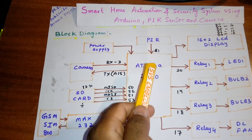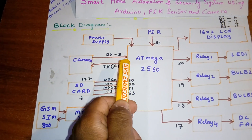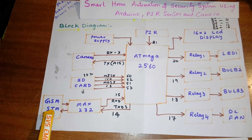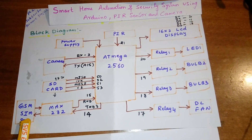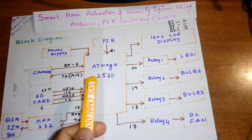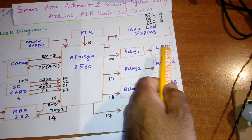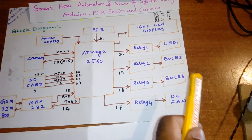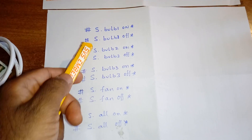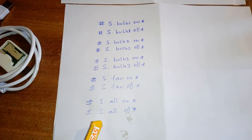If PIR motion is detected, the camera will capture a photo and store it into the SD card, and it will send an SMS alert saying 'Intruder Detected'. All data is displayed on the LCD. You can also send SMS commands to control appliances: bulb on, bulb off, fan on, fan off — using formats like 'Bulb 1 On', 'Bulb 2 On', 'Fan On', 'All On', 'All Off'.